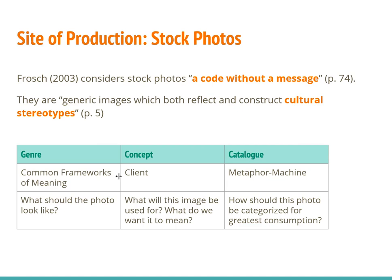As a genre, stock photos have to have a common framework of meaning to draw on, and they also need to be very vague. When thinking about genre and image, we're thinking about what should the photo look like. Stock photos often don't have a lot of details, and they usually have a white background — although not always — and they're more likely to be photos of happy people since they're often used to sell things.